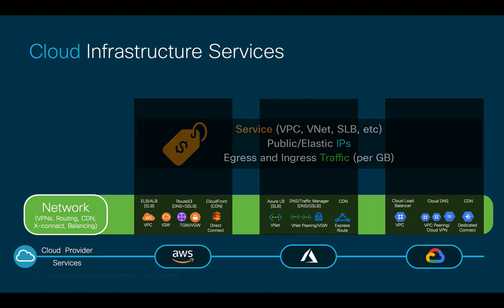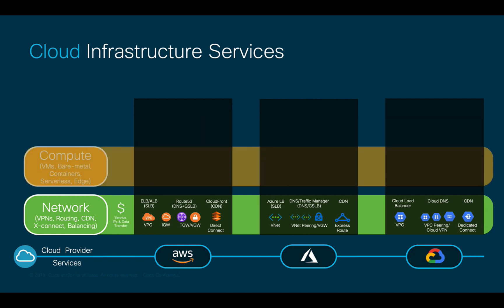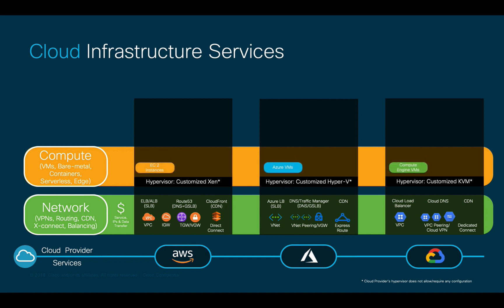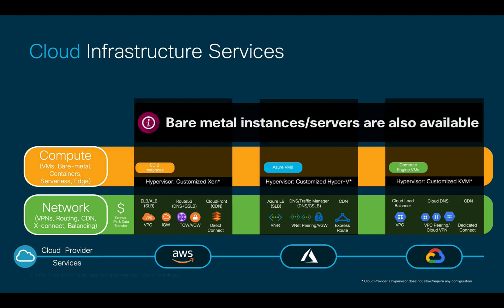Cloud networking is usually charged by the service, the public or elastic IP addresses you use, and the amount of data transferred. Moving to the compute layer, each cloud will use its own hypervisor version when VMs are used — whether that's a customized Xen, Hyper-V, or KVM depending on the cloud. The cloud hypervisor is not visible to the user and does not require any configuration.